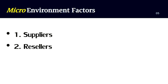Second, resellers — market intermediaries, middlemen, or resellers have a great contribution to the delivery of products to the ultimate consumers. For example, if the reseller has a reputable name, then this reputation can be leveraged in marketing the product. Third, customers — a customer is an individual or business that purchases goods or services. Customers are important because they drive revenues; without them, businesses have nothing to offer.